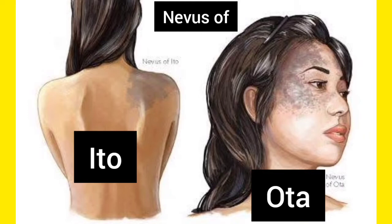So always remember: Ota is around the eye, and Ito is around the shoulder. They always confuse you with this terminology. Another term they sometimes give is the Mongolian spot, which I will further discuss. Make it clear in your mind: Ito occurs on the shoulder, and Ota — 'O' like a circle — occurs around the eye.